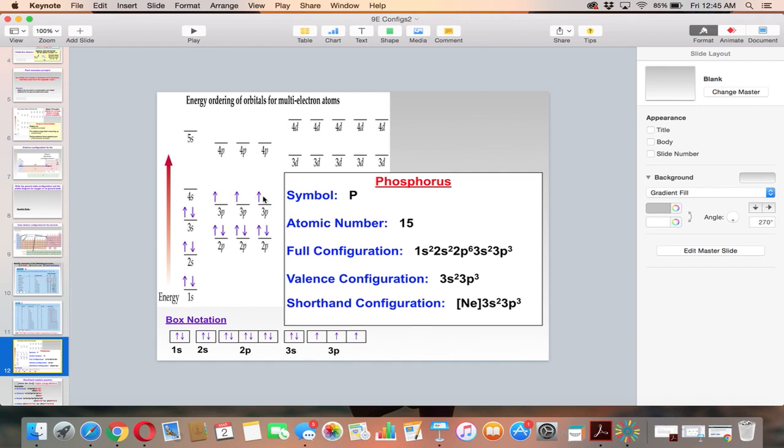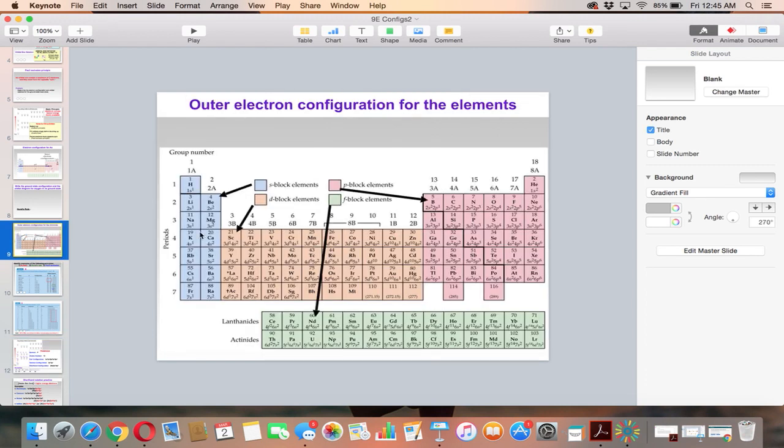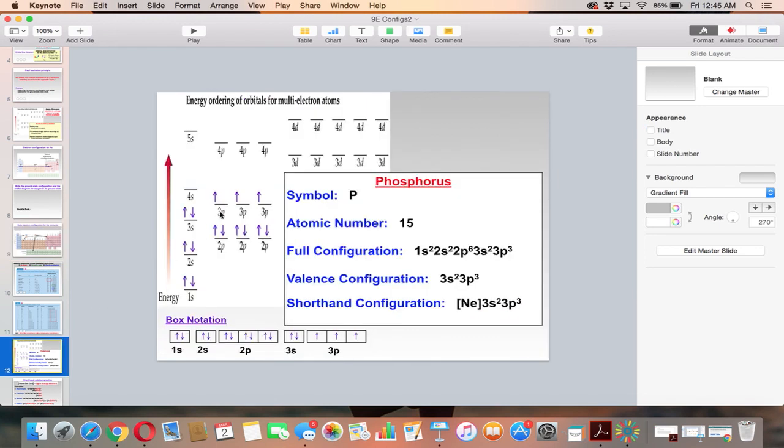If you look at a periodic table, phosphorus is in group 5, so it has 5 valence electrons. And if we go back and we look at this, it has in the 3s, 1, 2, and the 3p, 1, 2, 3, so a total of 5 valence electrons because they count the outermost. So that would be the 3s and the 3p.